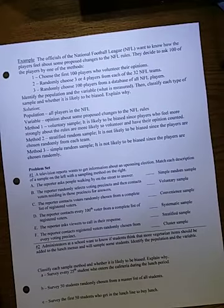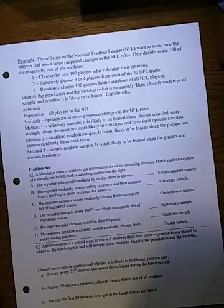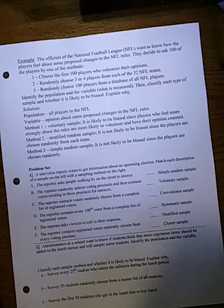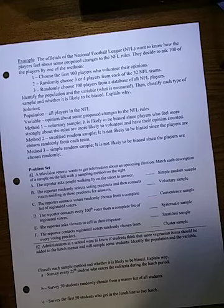As an example, the officials of the National Football League want to know how the players feel about some proposed changes to the NFL rules. They decide to ask 100 of the players by one of the methods. They either choose the first 100 who volunteer their opinions, randomly choose three or four players from each of the 32 NFL teams, or randomly choose 100 players from a database of all the NFL players. Identify the population and the variable, classify each type of sample and whether it's likely to be biased, and then explain why.